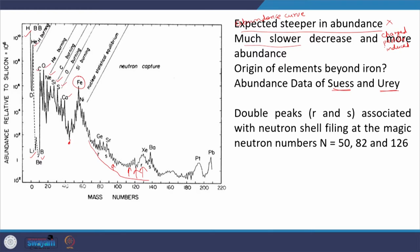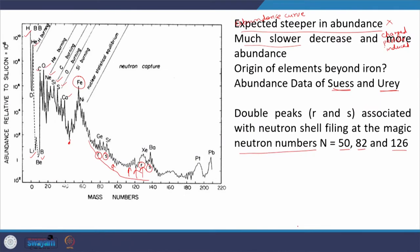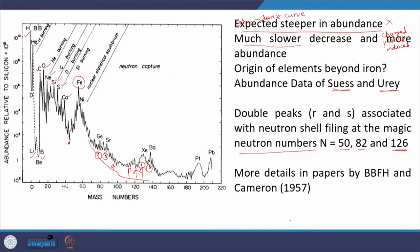You can see here peaks designated R and S — double peaks — and if you see the number of neutrons corresponding to these peaks, they were found to be associated with 50, 82, or 126 neutrons. By that time the shell model existed, and corresponding to neutron shell filling at the magic neutron numbers 50, 82, and 126, the observed abundance curve shows some peaks. These details were discussed in detail by B²FH — Burbidge, Burbidge, Fowler, and Hoyle — the same Hoyle who predicted the state in carbon-12.